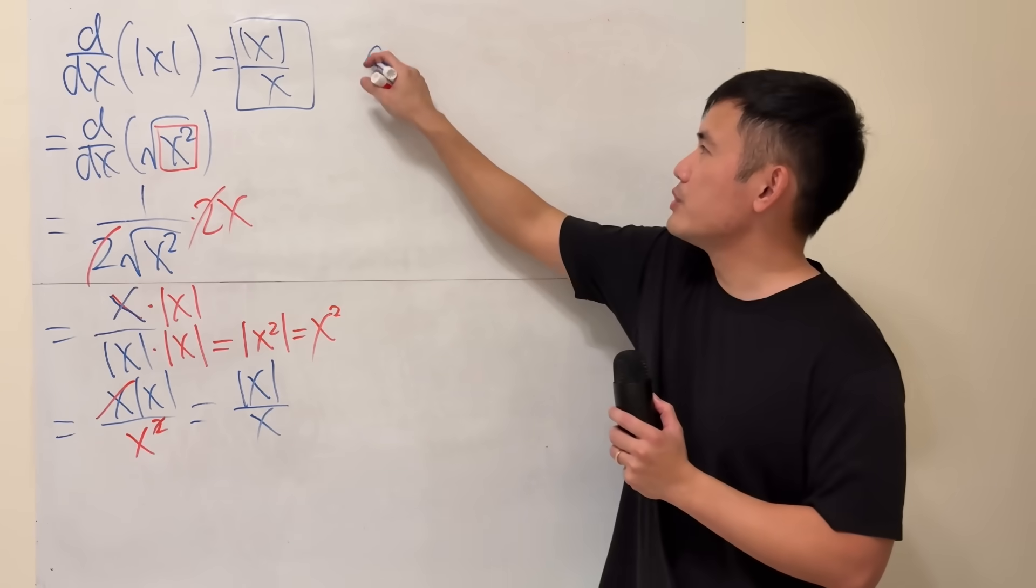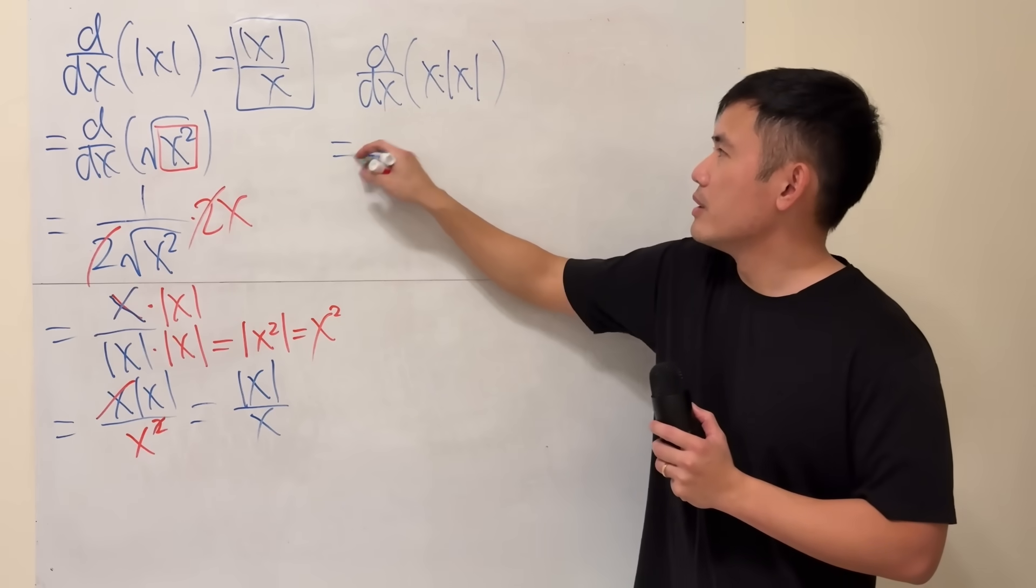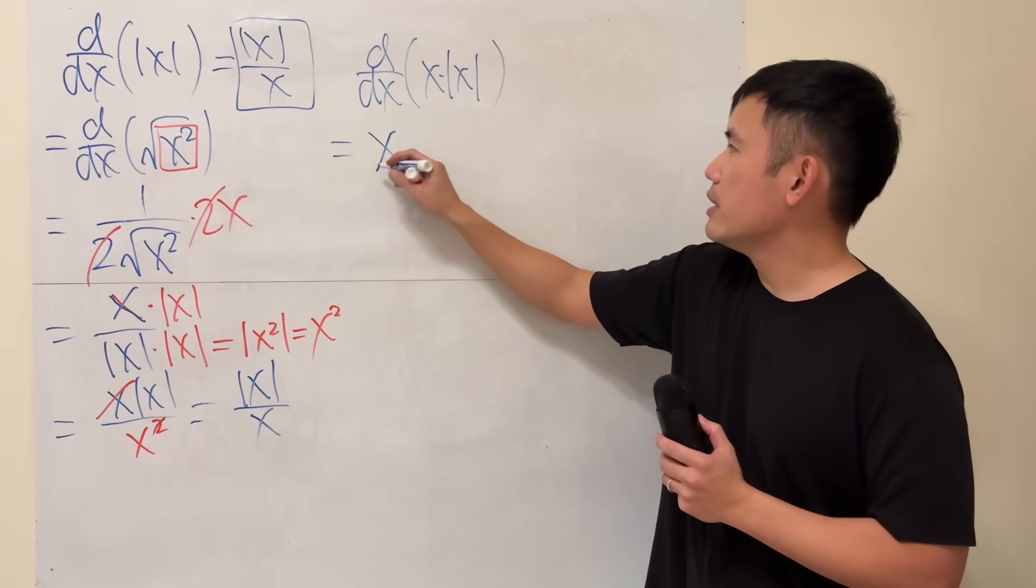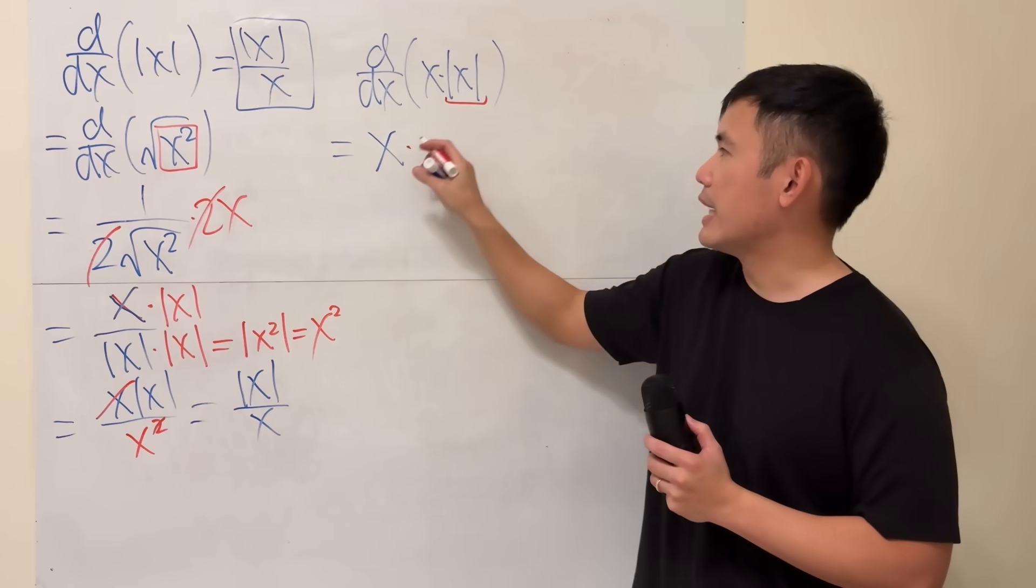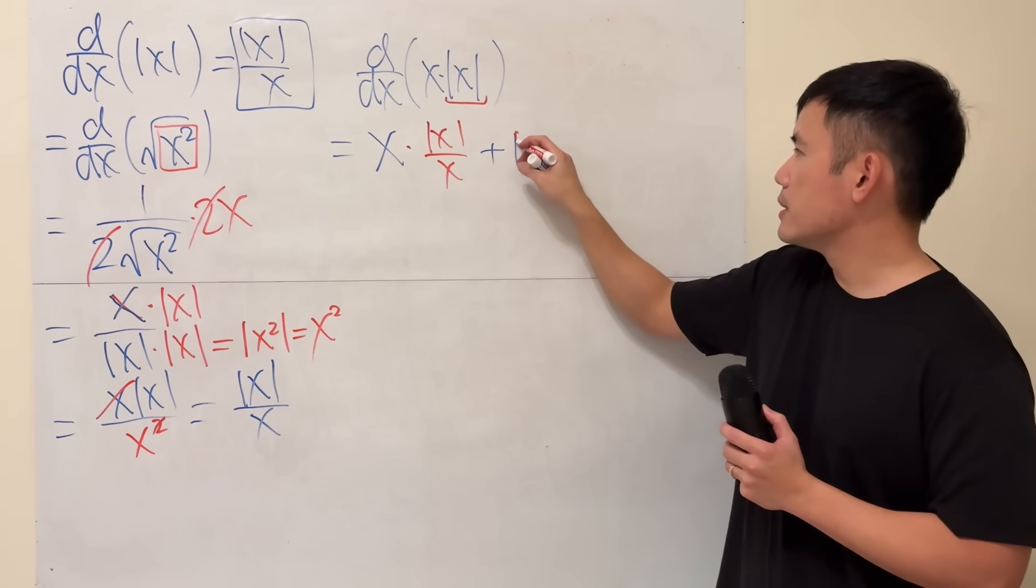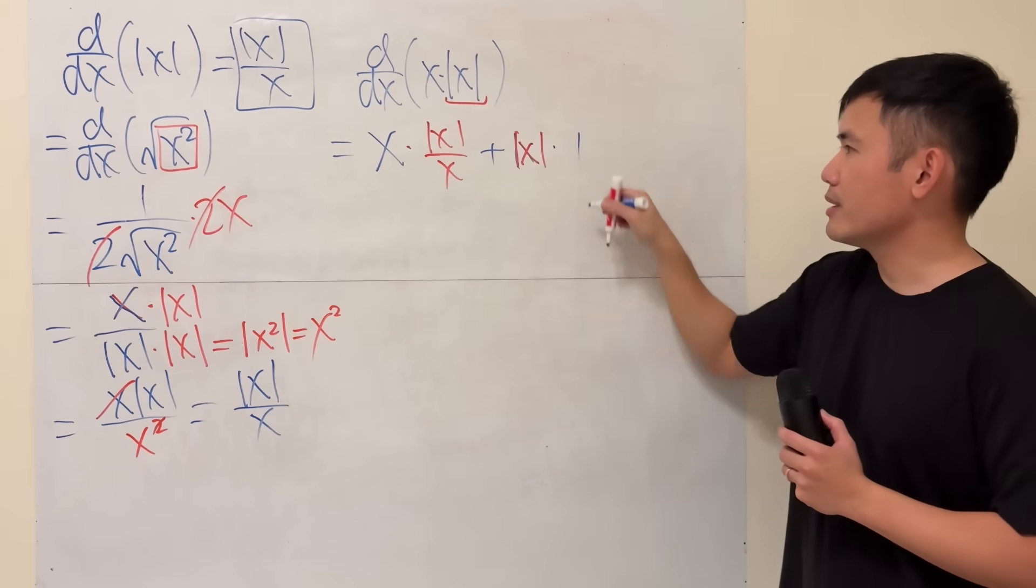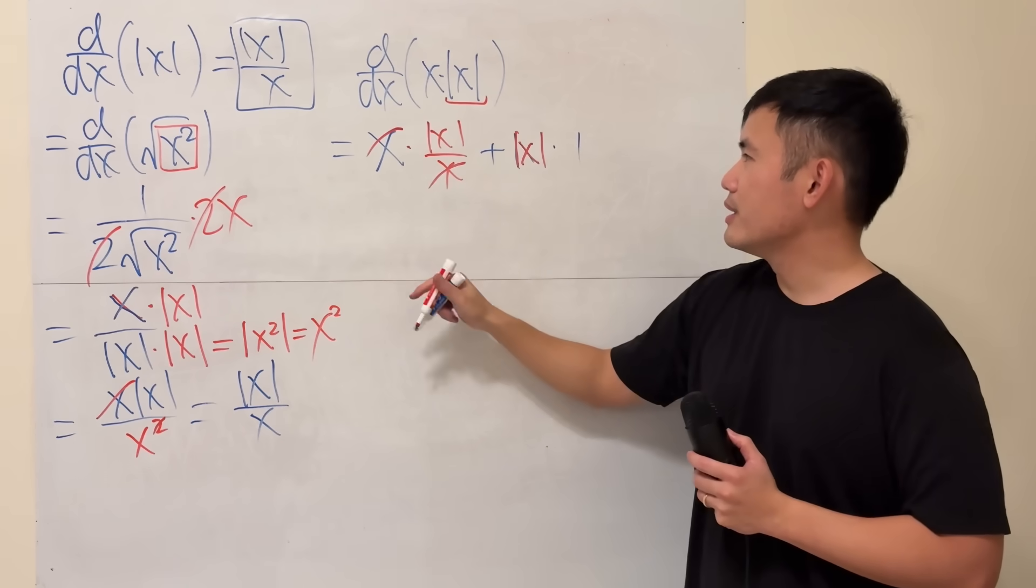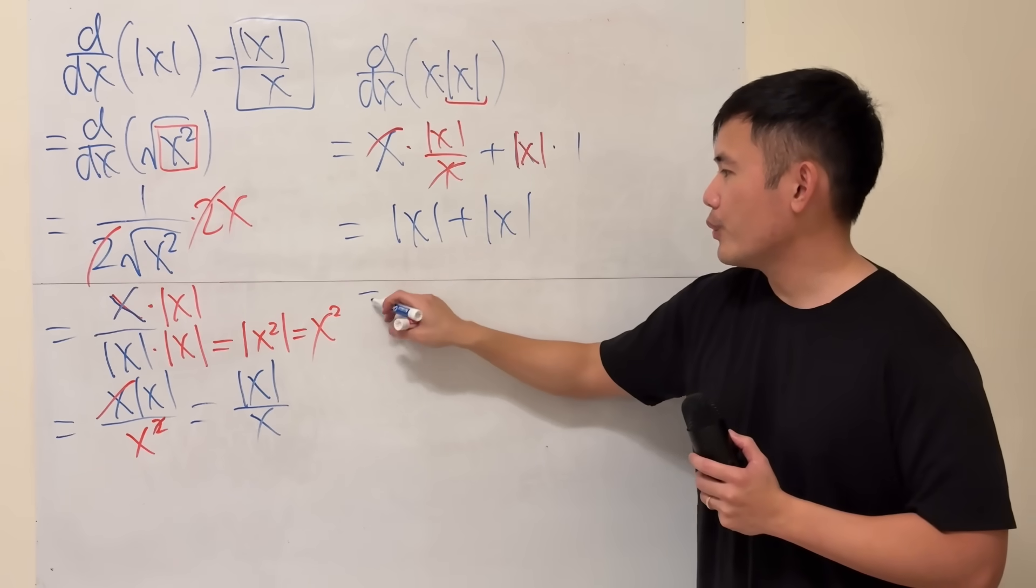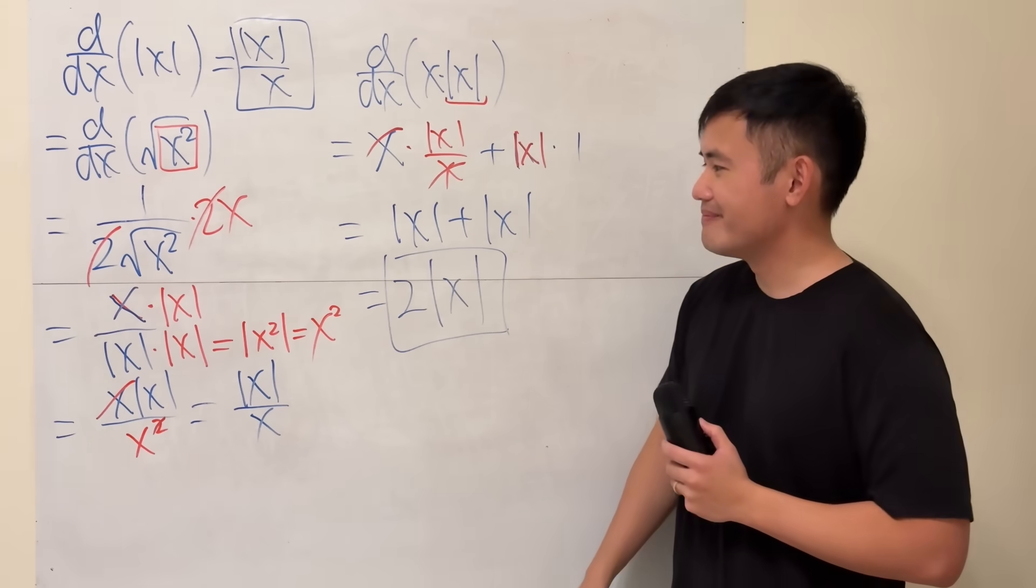Well, not done yet, because now I would like to show you when we differentiate x times absolute value of x. Now, it's a product of two functions, so we have to use the product rule. I will keep the first function, and we multiply by the derivative of the second, which is just that. And then we add the second function times the derivative of the first, which is just 1. Now, check this out. Cancel, cancel. Guess what? We have absolute value of x here, plus another absolute value of x. All in all, we end up with two absolute value of x. Very nice. That's it.